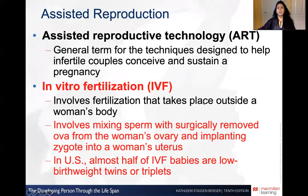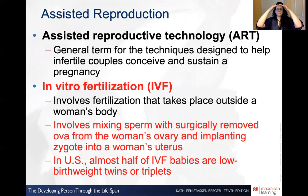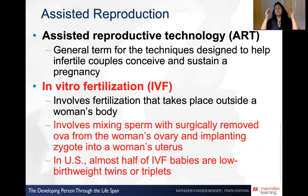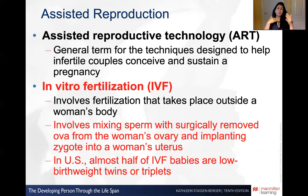Assisted reproductive technology, or ART, is the umbrella term for how we help couples conceive children when they can't. Couples that have been unsuccessful in trying to conceive naturally will look for ART. The primary form of ART that we're familiar with is in vitro fertilization, or IVF.